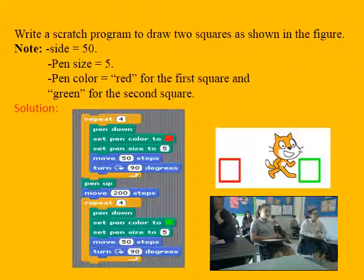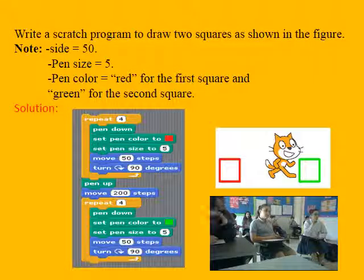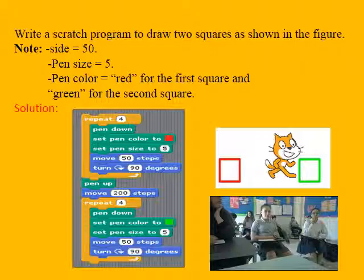Yes, we use pen down. How many? Four times. Why? Because we have four sides. Yes, and then color to red, and that's it, pen size to five.